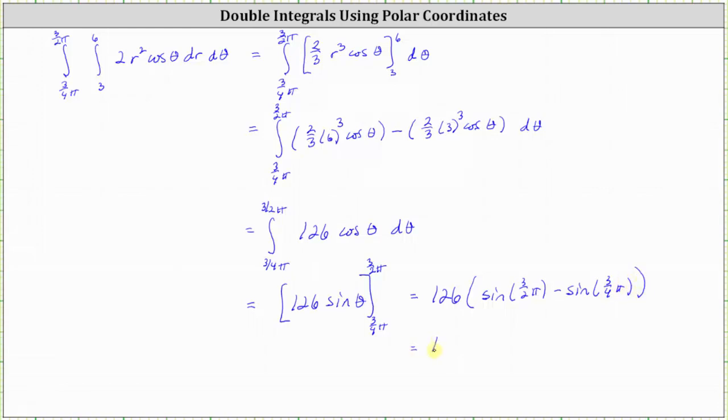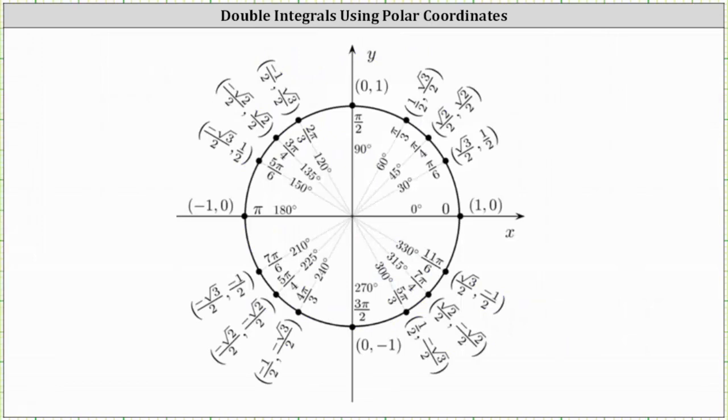This equals 126 times (sine 3/2 pi is -1, minus sine 3/4 pi, which is √2/2). If we need to, we can check the unit circle. The sine of 3/2 pi is the y-coordinate of -1, and the sine of 3/4 pi equals the y-coordinate of √2/2.